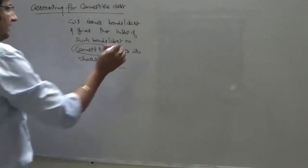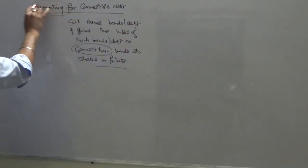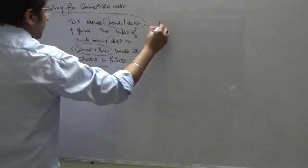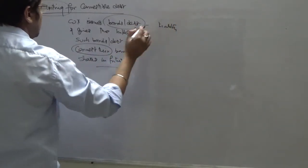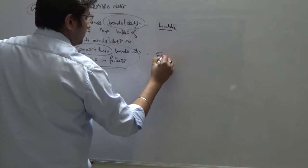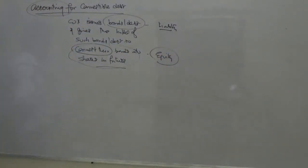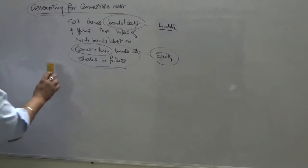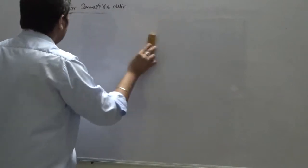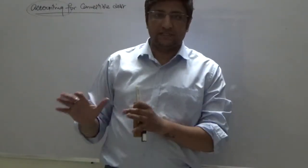Now let's try to understand why we even talk about the accounting part of it. At the point of issuance, we are issuing debt, so it is as good as a liability. But this is likely to be converted into shares, so in the future there is a likelihood that it might become equity. So let's look at the features of convertible debt and how the accounting for it might differ from accounting for pure debt without any conversion feature.